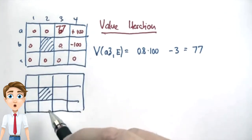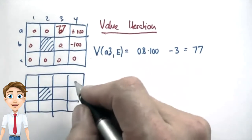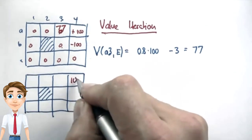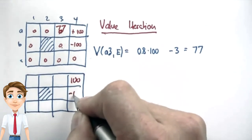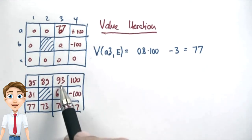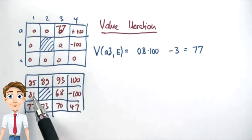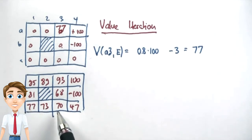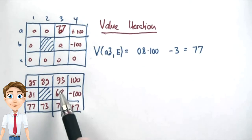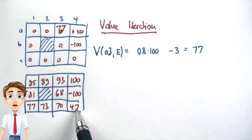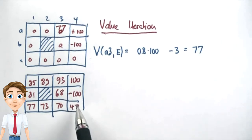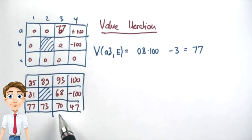If we run value iteration through convergence on this grid, we get the following value function: 93 very close to the goal, then 89, 85, 81, 77, 73, 70. State B3 is worth 68, and state C4 is worth 47, because we may stay in those states quite a while before executing an action that gets us out.